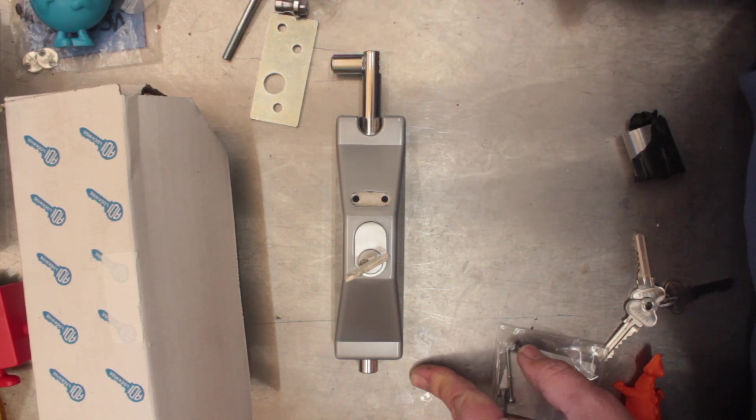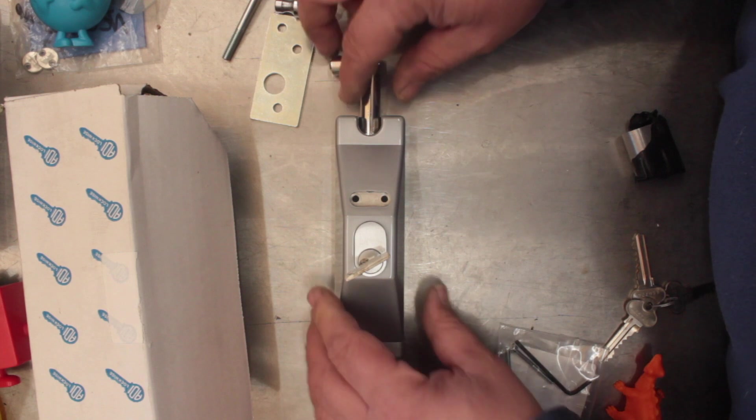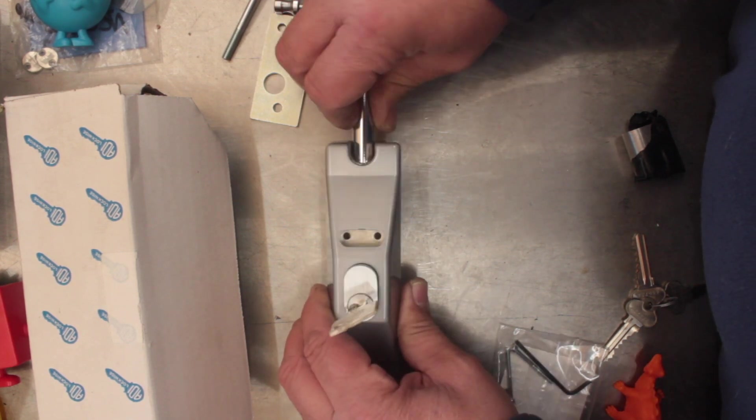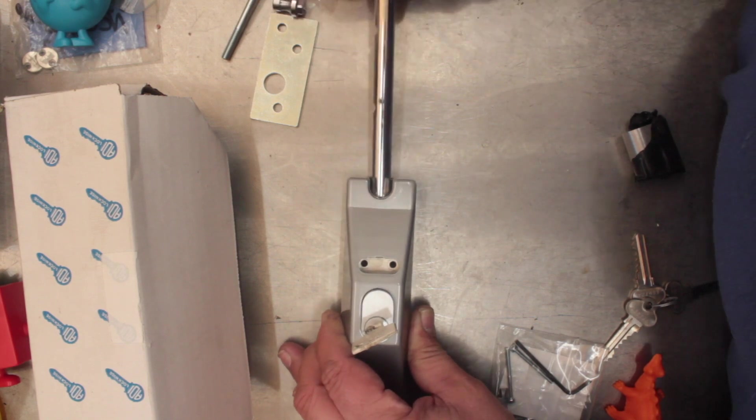Here we are. You have to kind of find that sweet spot so you can turn it in a 90-degree fashion to the left. The way I'm looking at it, go to the left, and then you can pull and the bolt will actually come out.